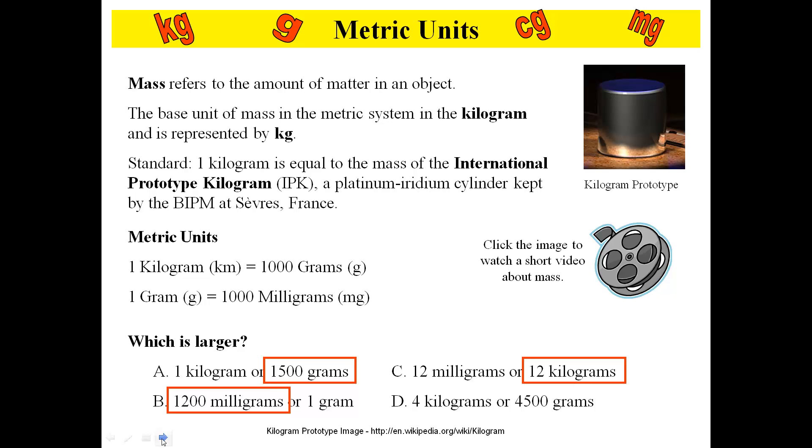And the next one is 4 kilograms or 4,000 grams. Kilo prefix meaning 1,000. Four times 1,000 is 4,000, or 4,500 grams. And we're probably looking at 4,500 grams.